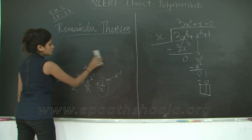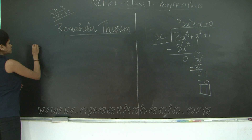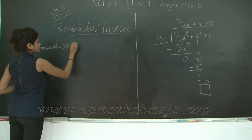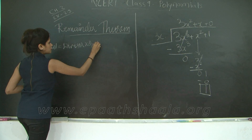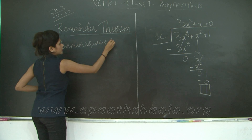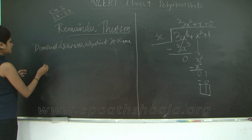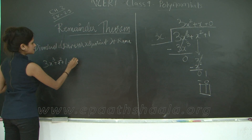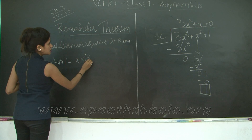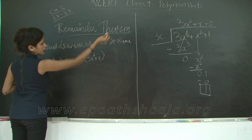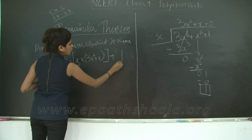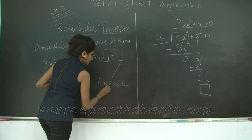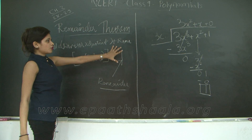This can be written in the form: dividend = divisor × quotient + remainder. Our dividend was 3x³ + x² + 1. It equals divisor x, times quotient 3x² + x, plus remainder 1. I have boxed up the remainder because the remainder theorem is going to be based a lot on what we get as the remainder.